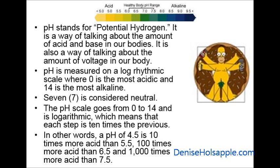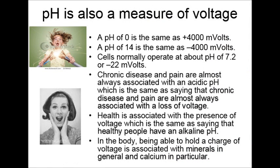Seven is considered neutral. The pH scale goes from 0 to 14 and is logarithmic, which means that each step is 10 times the previous. So a pH of 4.5 is 10 times more acidic than 5.5, 100 times more acidic than 6.5, and 1,000 times more acidic than 7.5. pH is also a measure of voltage: a pH of 0 is the same as positive 4,000 millivolts, and a pH of 14 is the same as negative 4,000 millivolts.